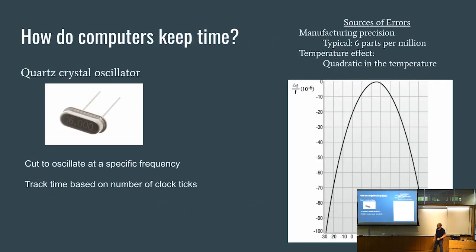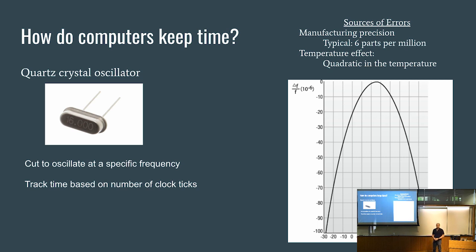This led us to understand how clocks are kept in a computer system. In most systems, if you drill down low enough, there's a crystal oscillator that sits there and oscillates. It's a little bit of a miracle of manufacturing — they cut quartz crystals so they operate at pretty close to the desired frequency. You put one of these in, you know what frequency it's supposed to run at, and you count the number of ticks to get a measure of time out of it.